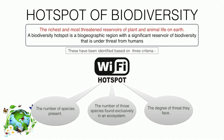To classify or identify one area as a biodiversity hotspot, we need to fulfill some criteria. These are: the number of species present, the number of those species found exclusively in an ecosystem, and the degree of threat they face. These three conditions or criteria must be fulfilled for each and every hotspot area.